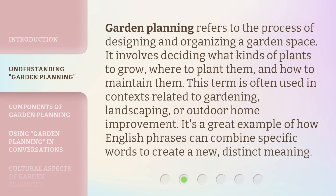Garden planning refers to the process of designing and organizing a garden space. It involves deciding what kinds of plants to grow, where to plant them, and how to maintain them. This term is often used in contexts related to gardening, landscaping, or outdoor home improvement. It's a great example of how English phrases can combine specific words to create a new, distinct meaning.